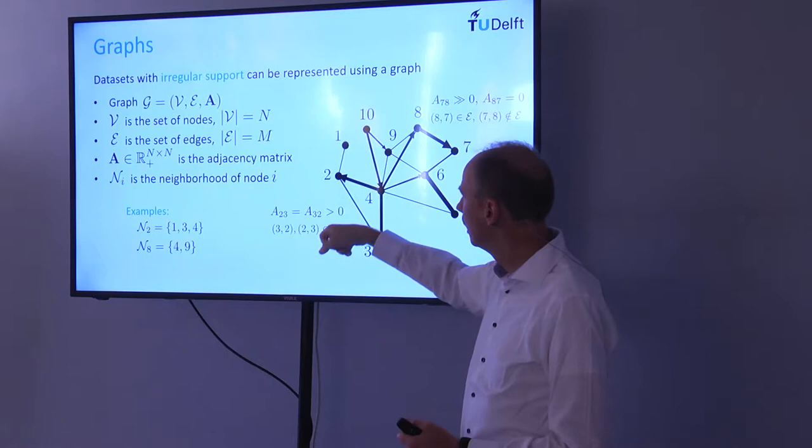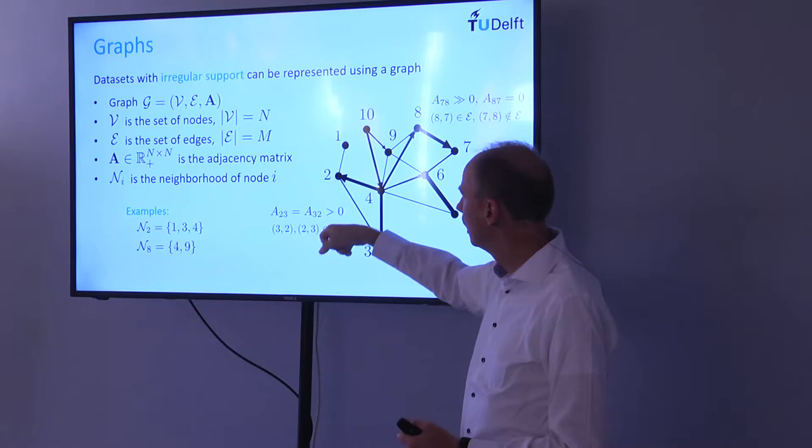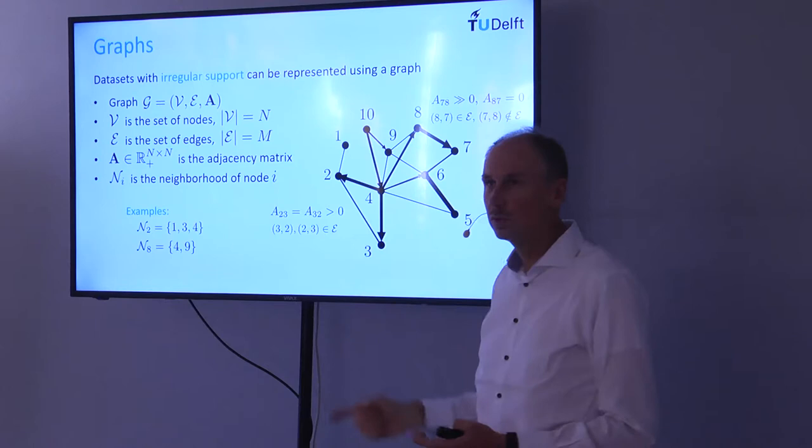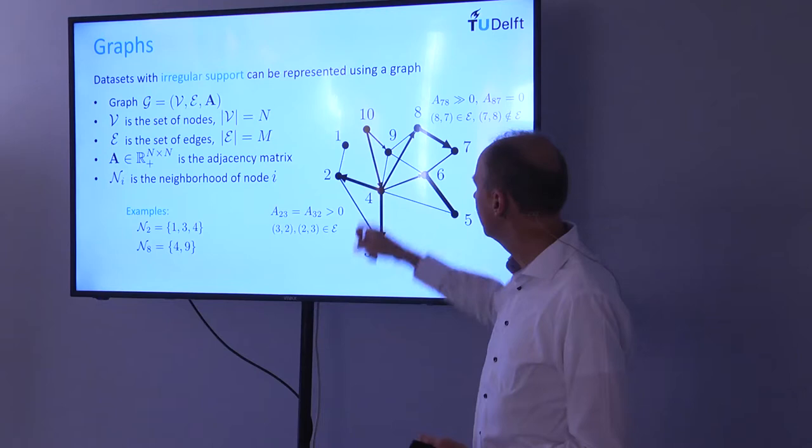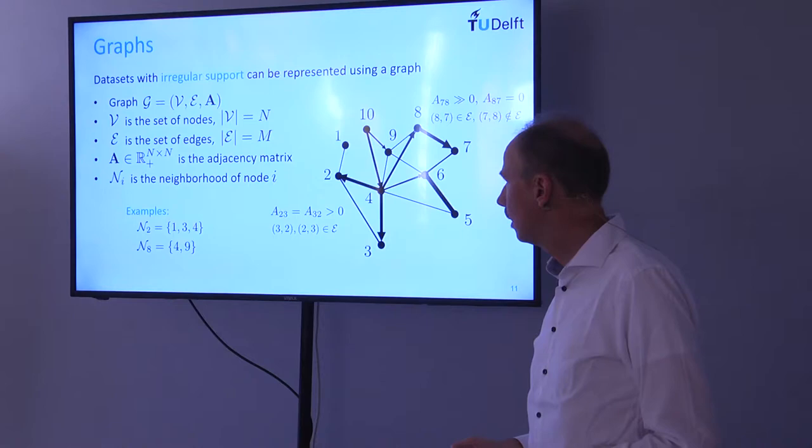For node 2's neighborhood: it has undirected edges to nodes 1 and 3, and node 4 points toward node 2, so all three are in the neighborhood. For node 8: node 7's edge goes away from 7 so 7 is not in node 8's neighborhood; only nodes 4 and 9 are, since they point toward node 8.